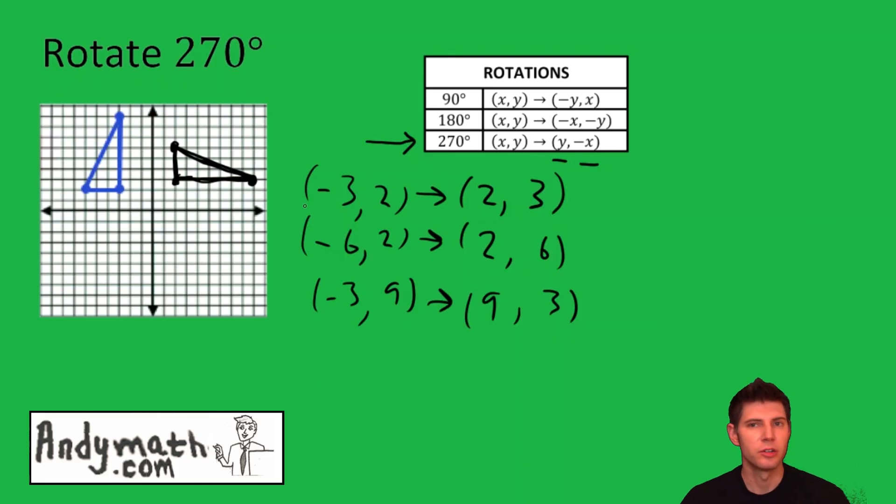And now you can see that the figure was rotated 270 degrees, so it changed the orientation and the quadrant that it's in. So this makes sense.